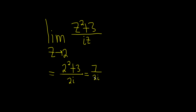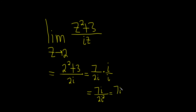Now, typically we don't want to leave our answers like this, so what we do is we get rid of the i on the bottom. We do that by multiplying by i over i. So what happens now is you get 7 times i in the numerator, and on the bottom you get i times i, so you get 2i squared. And i squared is negative 1, so this is 7i over 2 times negative 1, so you just get negative 7i over 2.